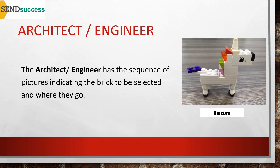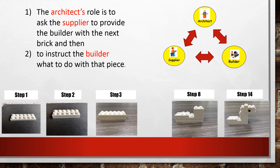Starting with the architect or engineer: the whole group gets to see the photo or picture of the model they're going to build, and the architect has the sequence of pictures indicating which brick needs to be selected and where it needs to go. The originators of Lego therapy advocate that all group members see these instructions to enable joint attention and collaborative working, though some speech therapists prefer that only the architect sees them so the children are more likely to develop descriptive language and positional words. The architect's role is to ask the supplier to provide the builder with the next brick, and then to instruct the builder what to do with that piece.